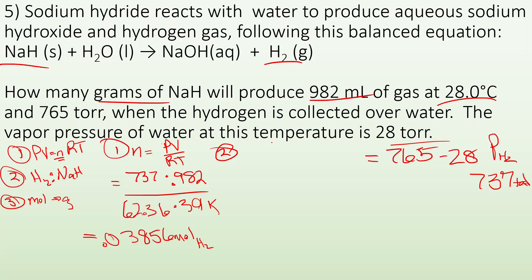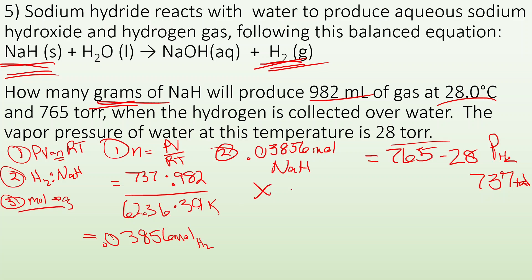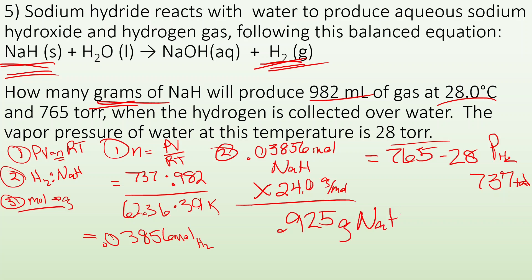Second step is the mole-to-mole ratio. It's one-to-one from the balanced equation, so I also have 0.03856 moles of NaH. Last step is converting moles to grams: multiply by the GFM of NaH, which is about 24 g/mol. I end up with 0.925 grams of NaH — pretty incredible that about one gram of this stuff can react to give you almost a liter of gas.